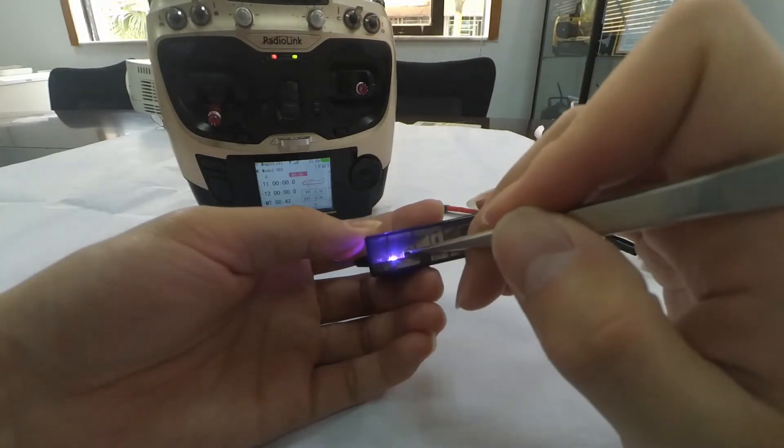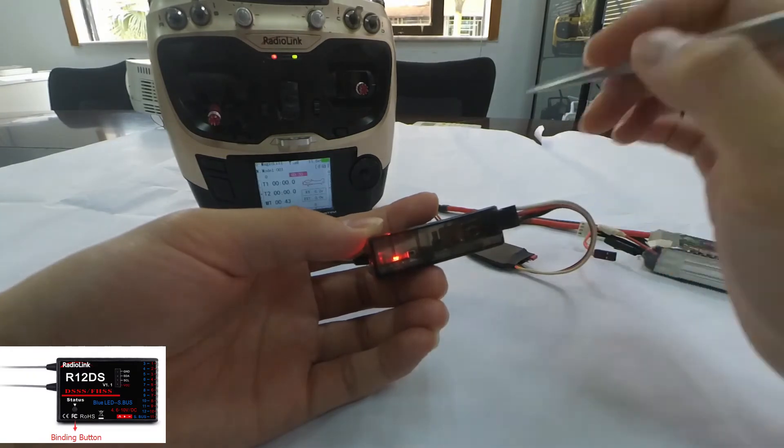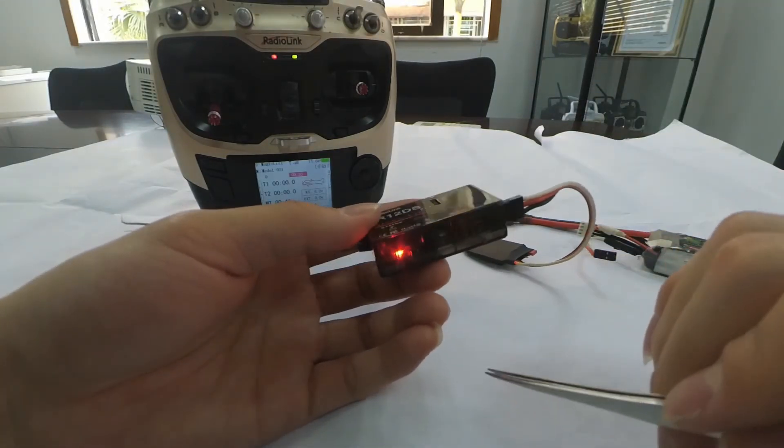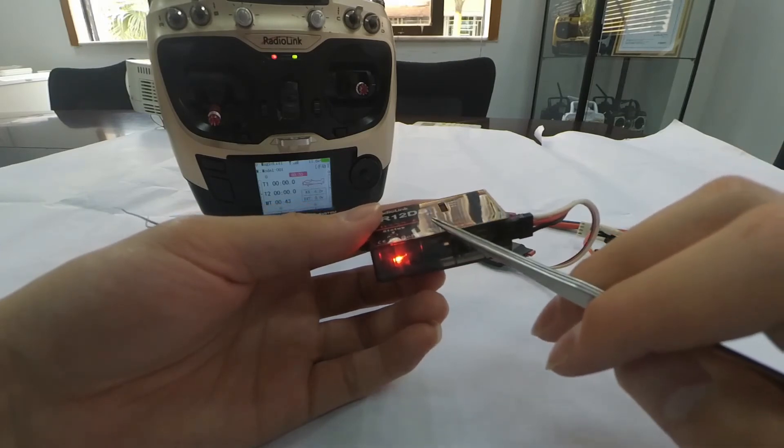If we want to change the signal output as PWM, we need to short press the binding button twice within one second. We can see that the LED turns red, meaning the current signal output is PWM.